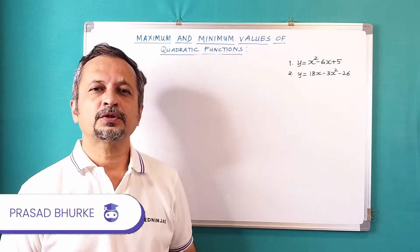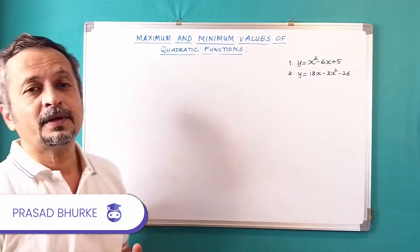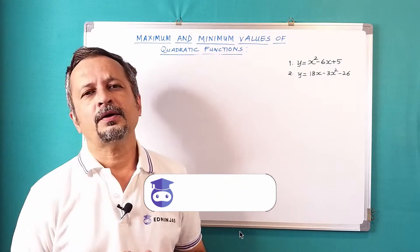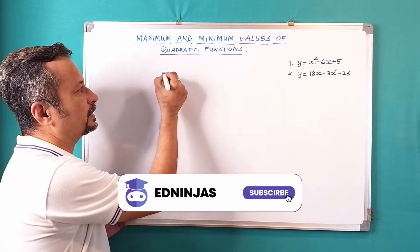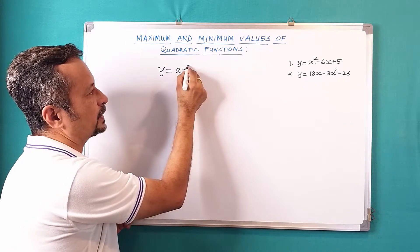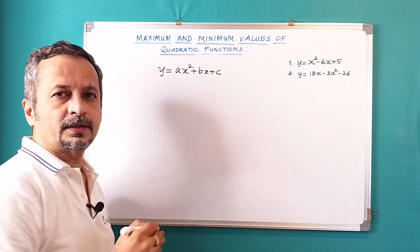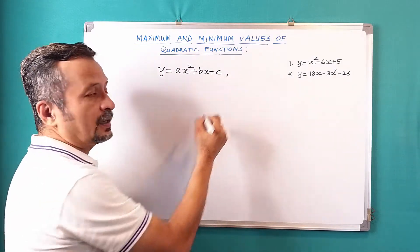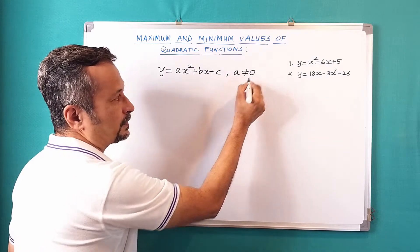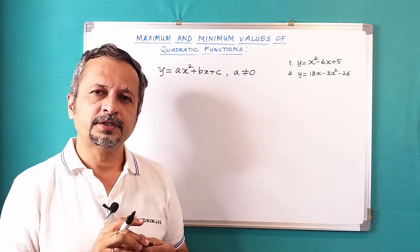Hello friends, we are on quadratics and today we are going to cover maximum and minimum values of quadratic functions. When we have a quadratic function like y = ax² + bx + c, where a, b, c are constants and a ≠ 0, the curve we get is a parabola.